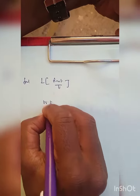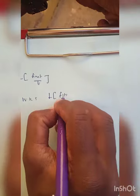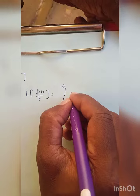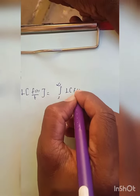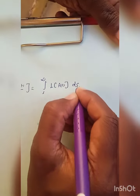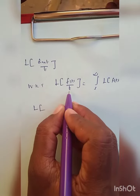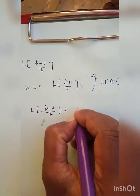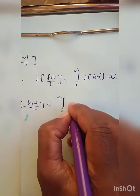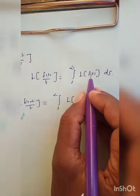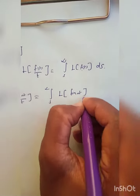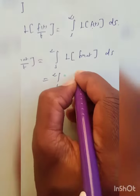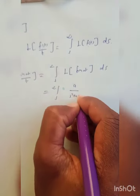We know one result: the Laplace transform of f(t)/t equals the integral from s to infinity of the Laplace transform of f(t) ds. We apply that formula here. Since t is not in the denominator as a finite value, Laplace transform of sin(at)/t equals the integral from s to infinity of the Laplace transform of sin(at) ds. We know that the Laplace transform of sin(at) equals a divided by (s² + a²).